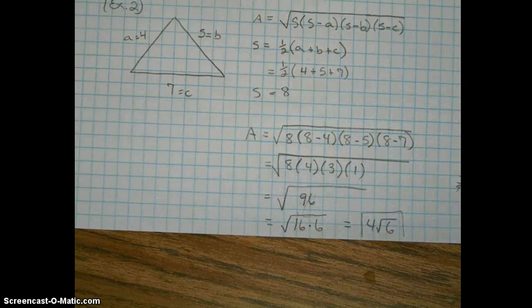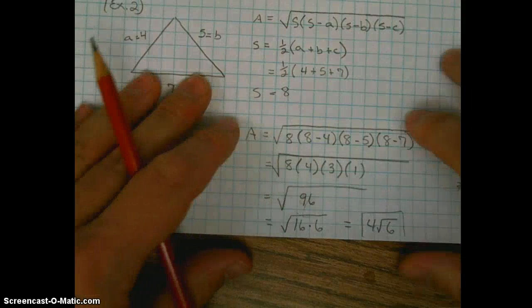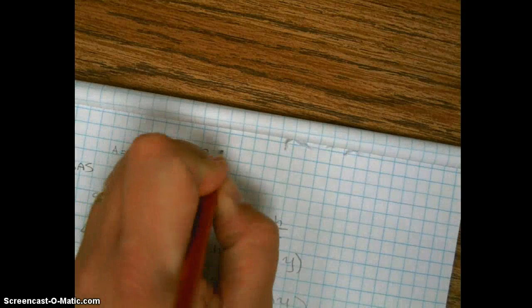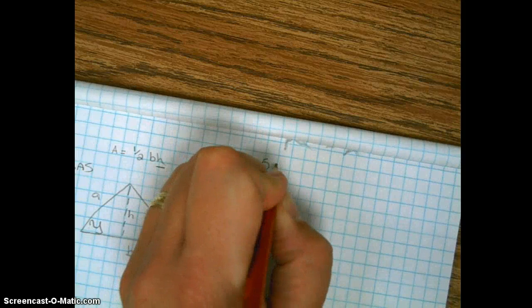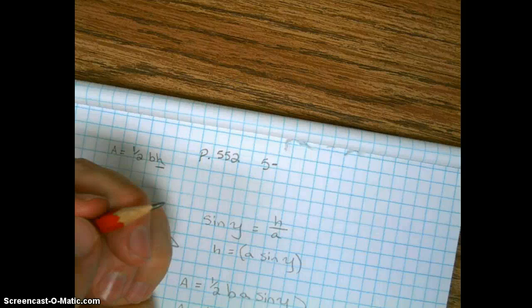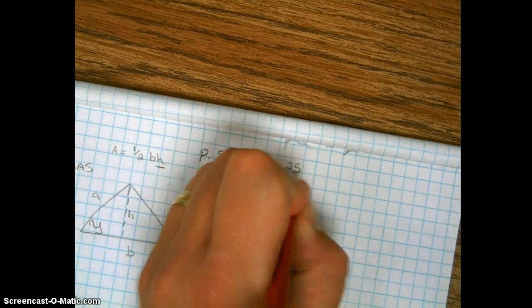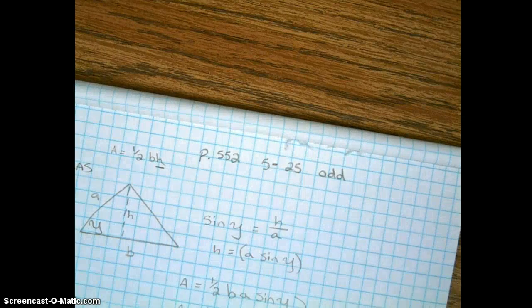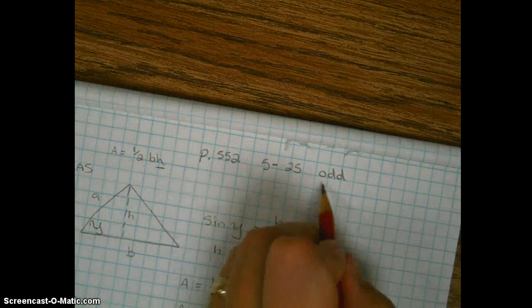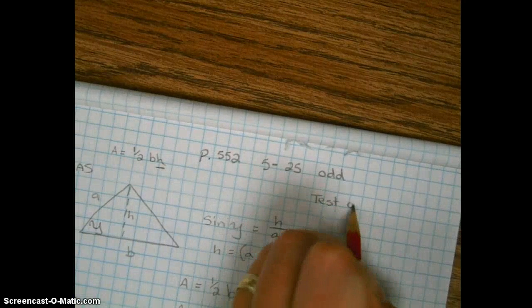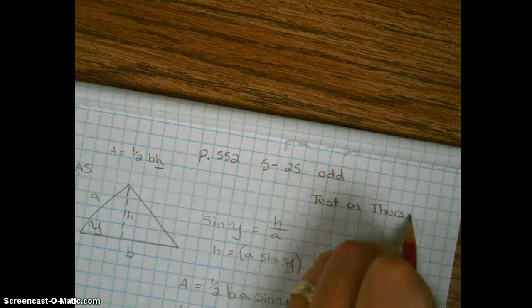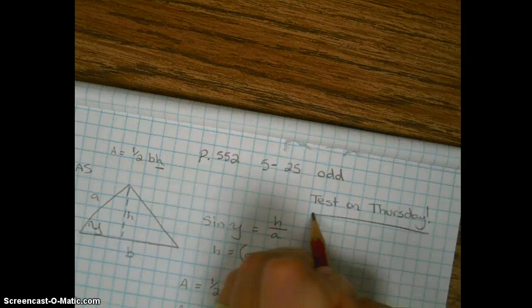And so that's how you find the area when given side, side, side. Your assignment, let's go back up here to the top. We're going to go to page, starting on page 552. We're going to do five through 25 odd. Okay, and heads up, we're going to take a test over this chapter on Thursday. So test on Thursday. Heads up. Be safe.